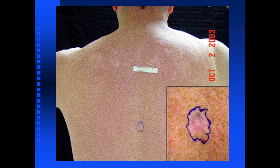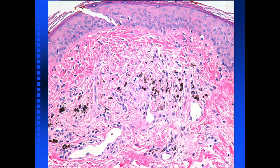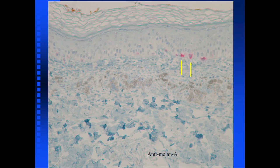Let me tell you about a case that really happened at Mount Sinai. We had a 53-year-old male with a several-month history of a variably pigmented skin lesion. Here's all it shows: there's a row of melanophages, a little bit of coarse fibrosis in the dermis, and prominent vessels. There's not much at the dermoepidermal junction. Another view shows coarse collagen and variable pigment in the dermis.